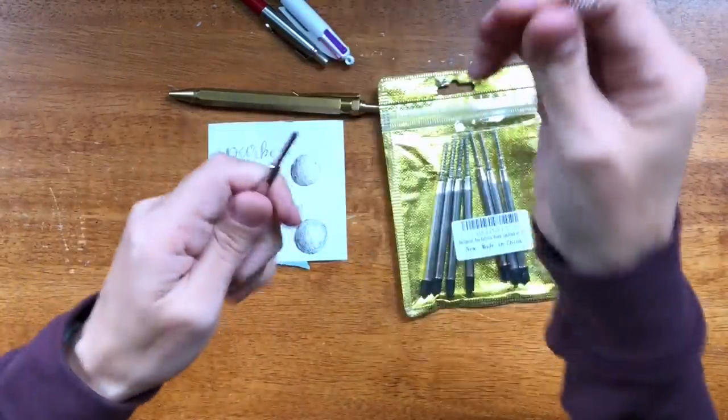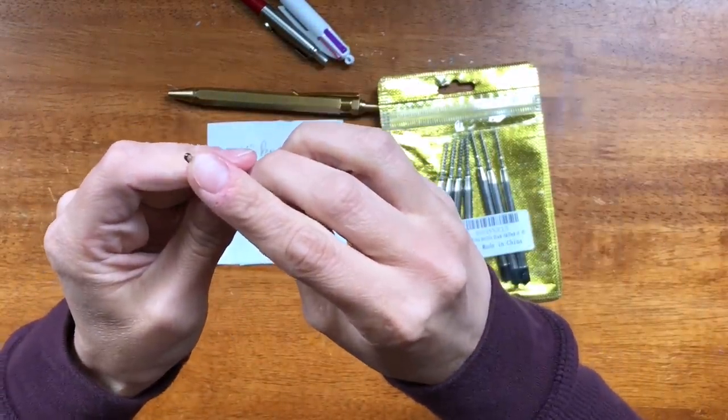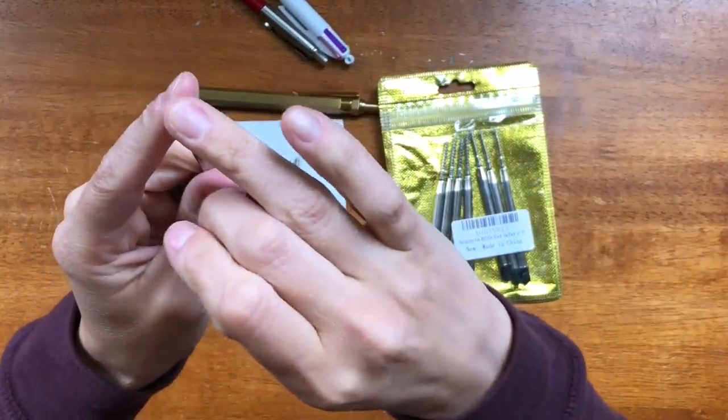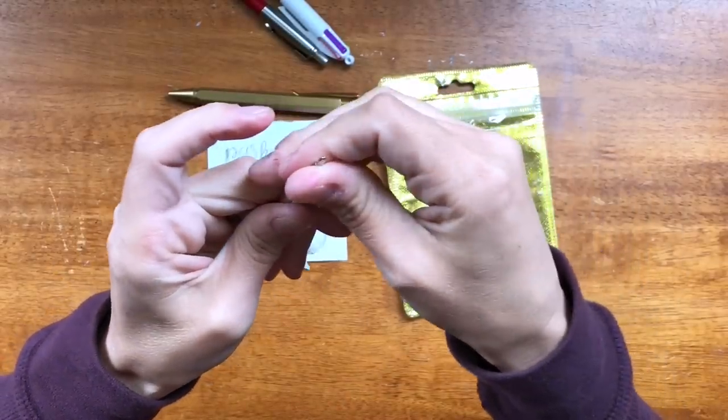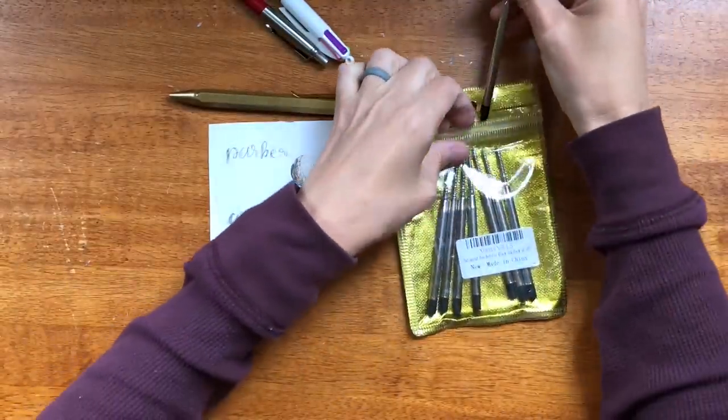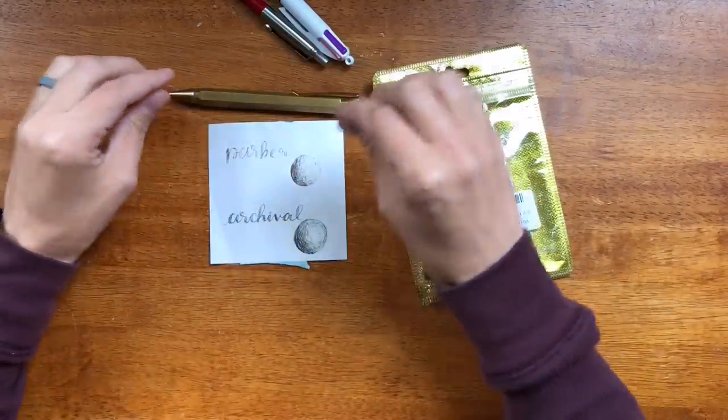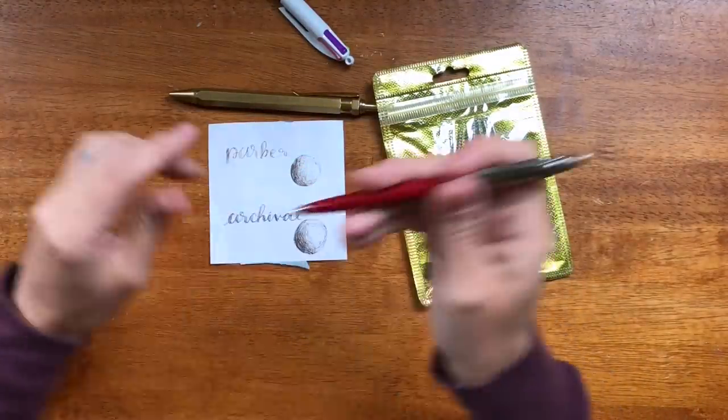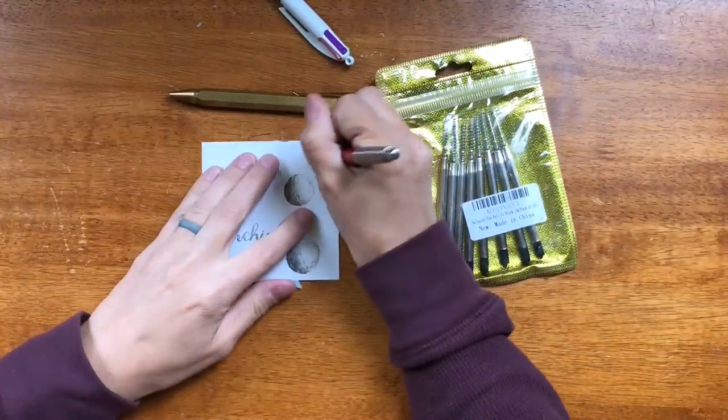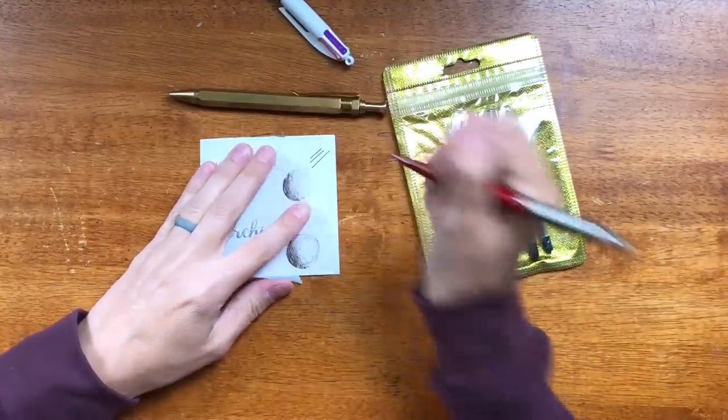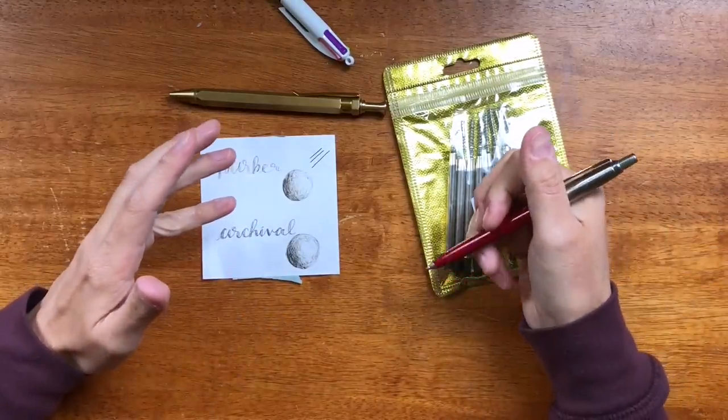And people get worried that it's going to dry out. There's no like cap to close it. But the whole idea of a ballpoint pen is that there's a roller ball in the tip, and the roller ball only moves if you push down on the pen, and then that dispenses the ink. So it's almost like it's kind of capped anyway.